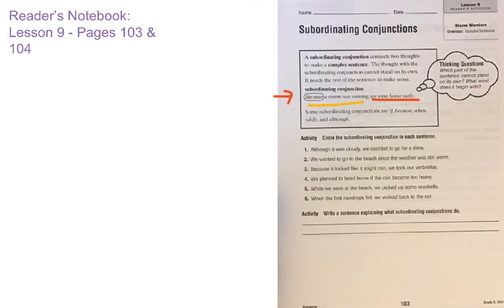Some examples of subordinating conjunctions are: if, because, when, while, and although. Those aren't the only ones, but those are some examples.